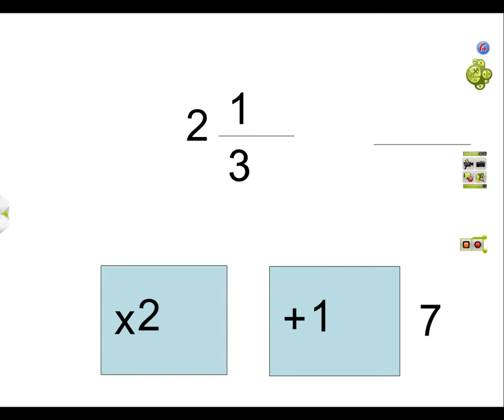It goes out into the 7. So that is the numerator, 7. The denominator stays the same. Again, you can do it really simply by doing this. 3 times 2 is 6. Plus 1 is 7.